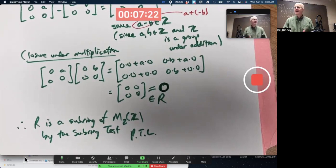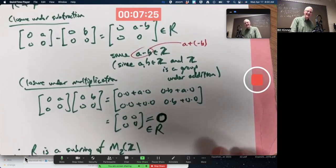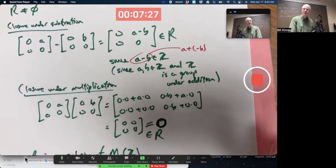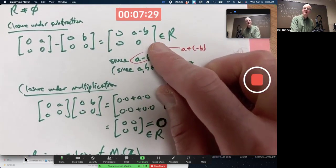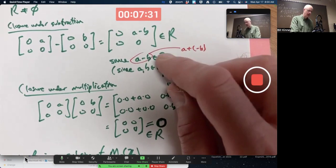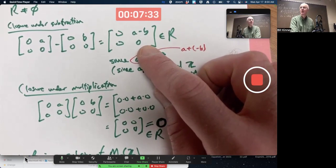So, it turns out it works. What would have happened if it had not worked? You know, you might have gotten, you know, if it was some different problem, you wouldn't necessarily have gotten an integer in the upper right corner, or maybe you would have gotten something non-zero somewhere else.